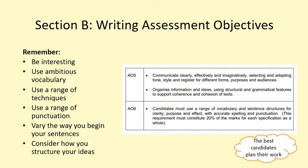Okay, so your success criteria. This question is worth 40 marks split into two parts. AO5 is worth 24 marks and that's for your content and organisation — it means communicate clearly, effectively and imaginatively, selecting and adapting tone, style and register for different forms, purposes and audiences, and organise information and ideas using structural and grammatical features to support coherence and cohesion of text. It basically means: be interesting, use different techniques, and think about your structure. AO6 is about your vocabulary choices, spelling, punctuation and grammar, and that's worth 16 marks.